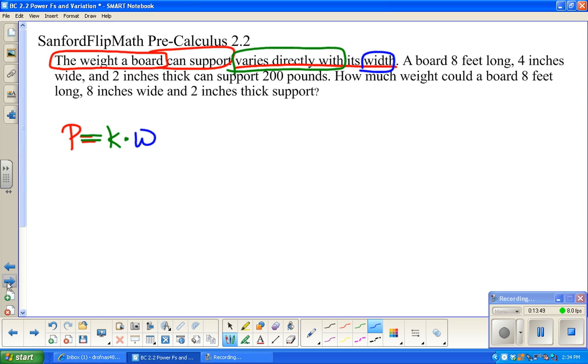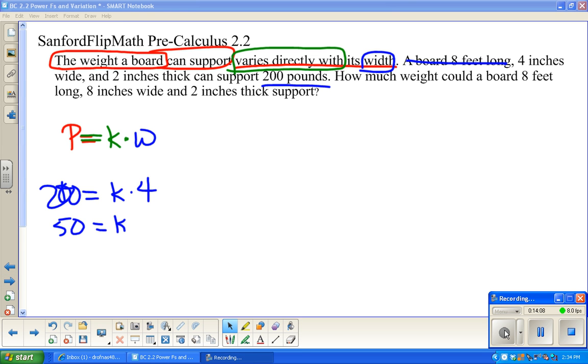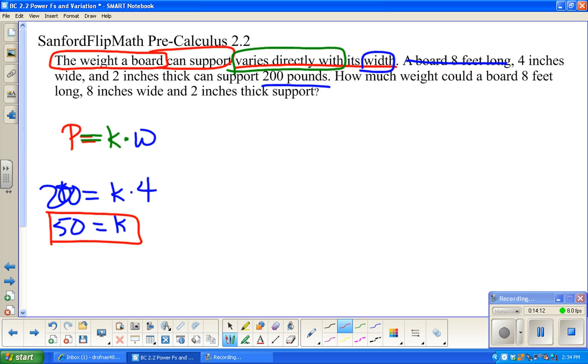A board eight feet long. Got nothing about length in here. Four inches wide. That I got. Can support 200 pounds. I can solve for k. I scared myself. I saw the k equaling the same thing. Don't think it always will. So, p equals 50 times w. Last time it was 2 squared that got me that.